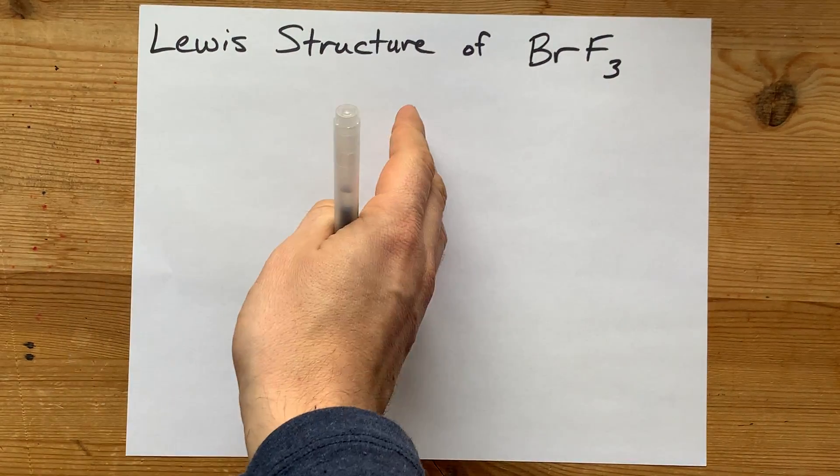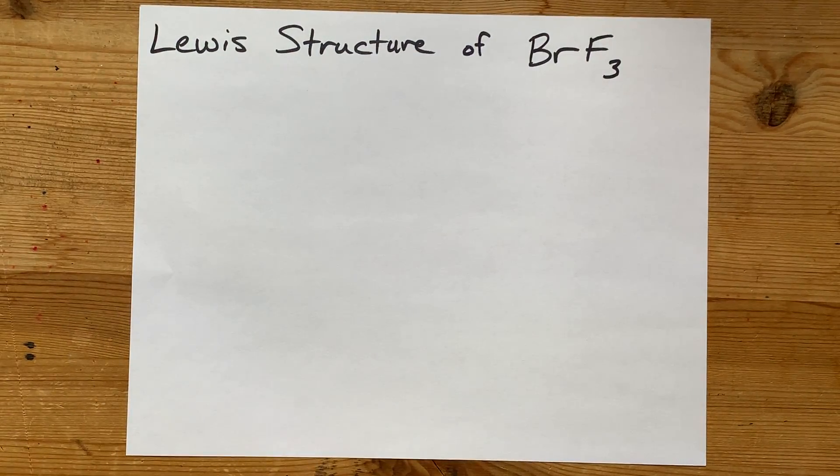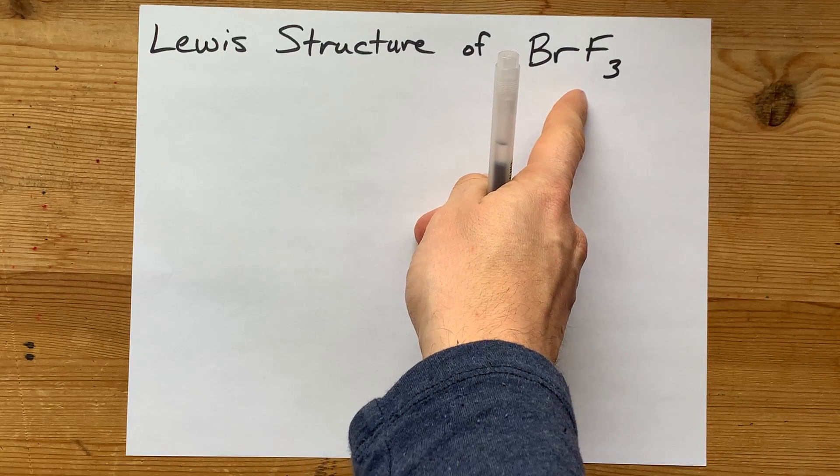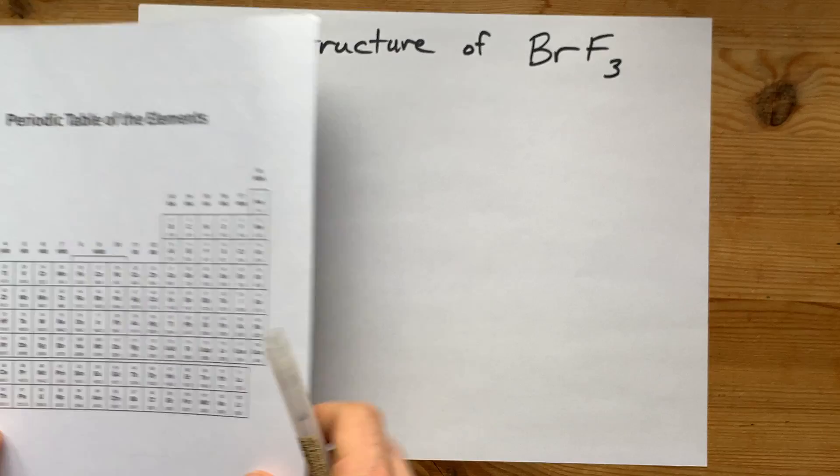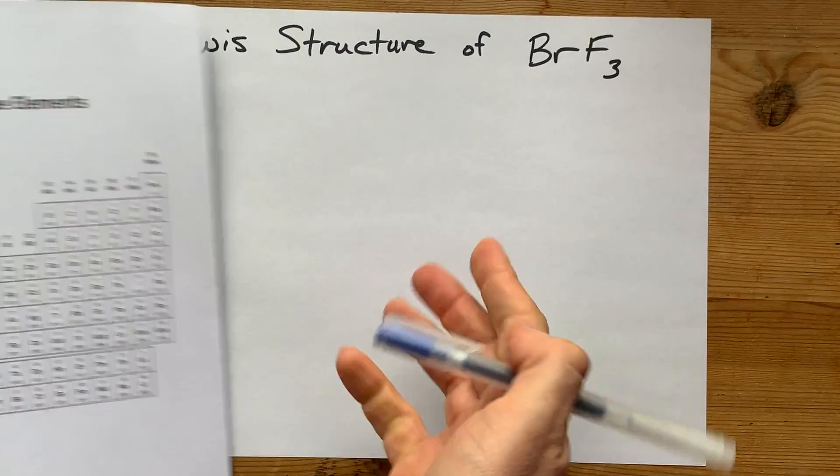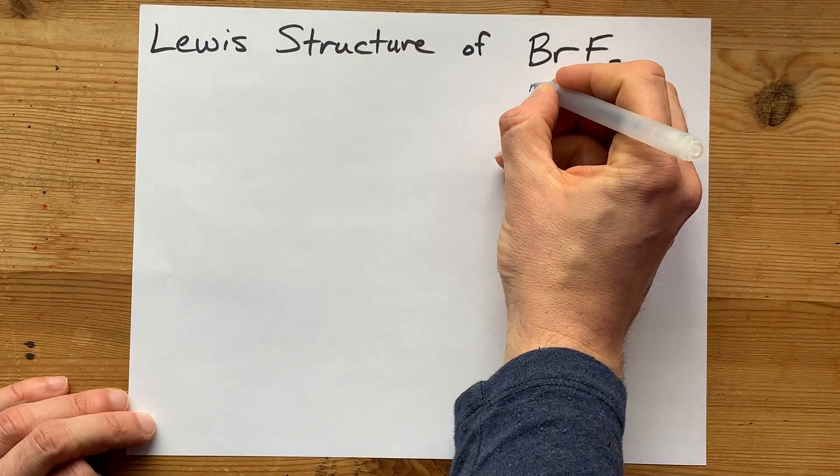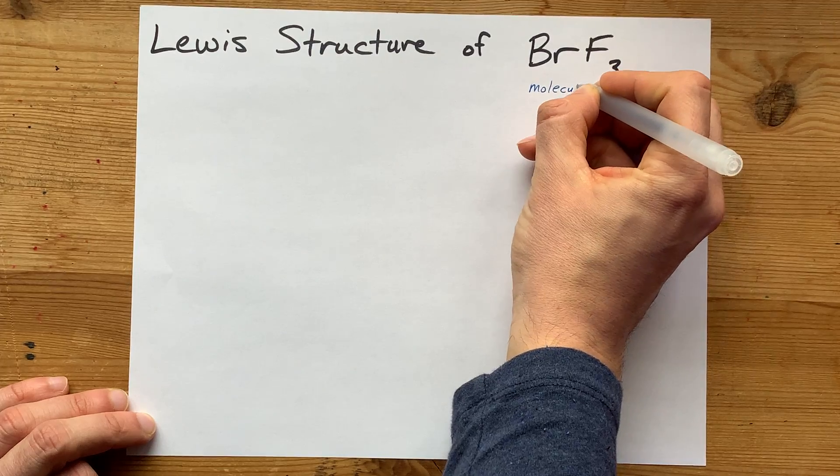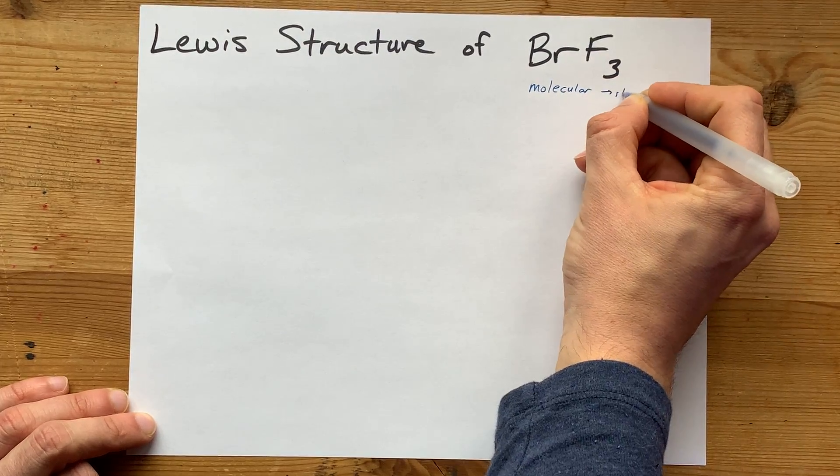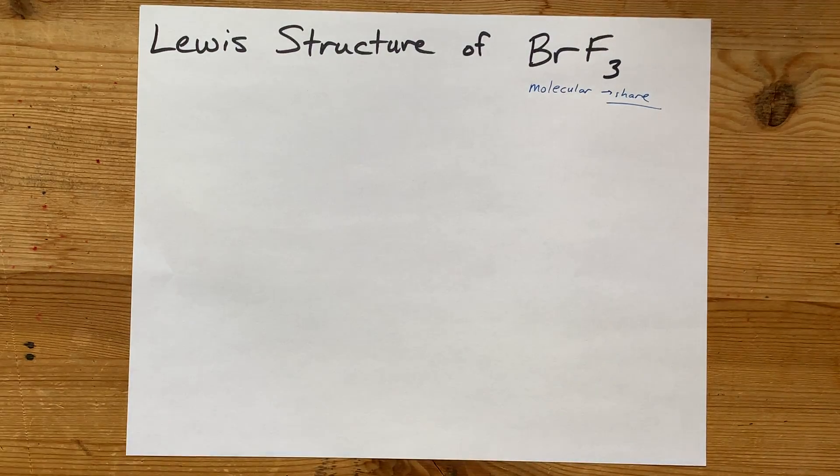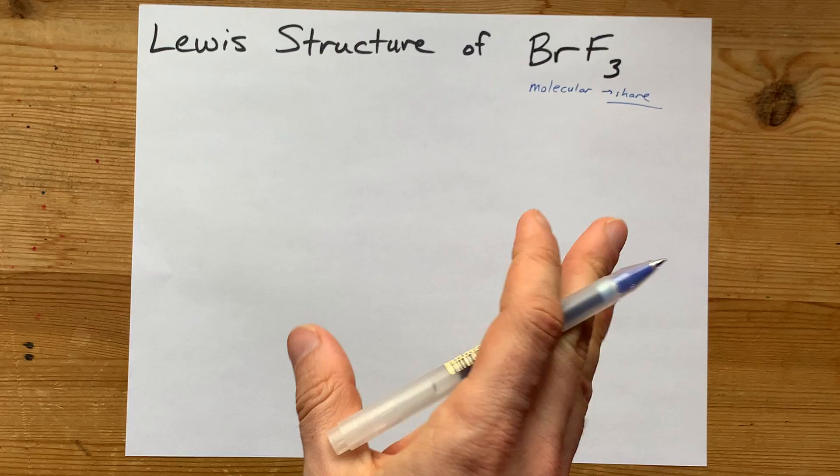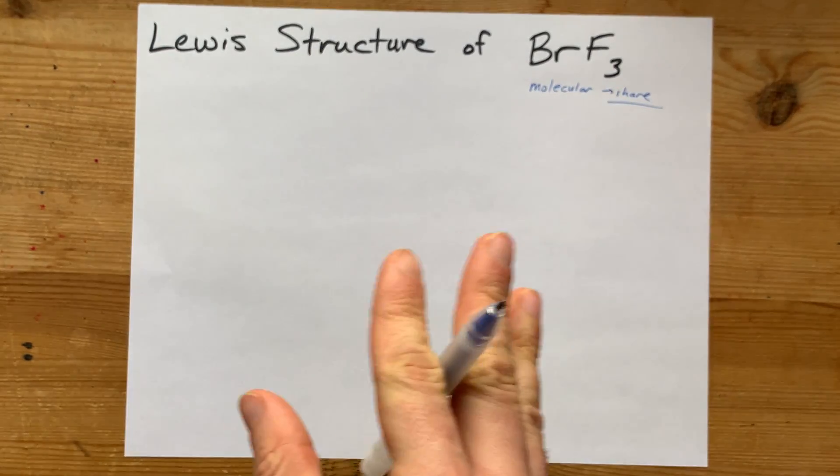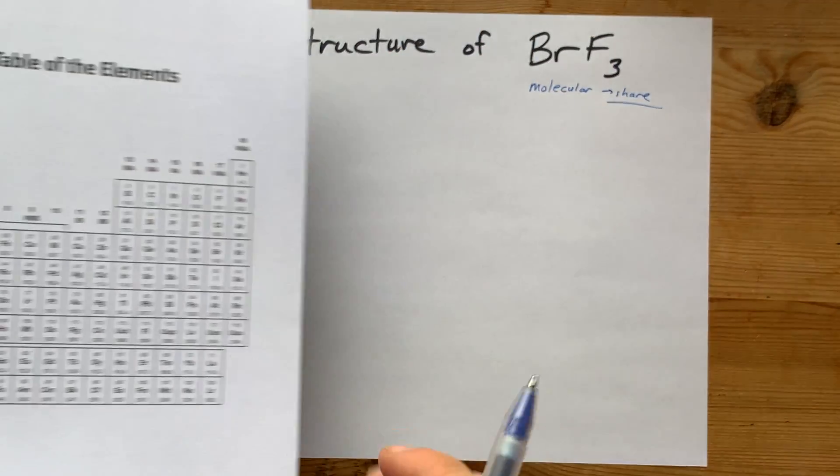Can we draw the Lewis structure of BrF3, bromine trifluoride? Yes, we can. First thing to note is that bromine and fluorine are both non-metals. That means when they bond together, they'll form a molecular compound. Molecular compounds share electrons. It's not going to be a transfer from one to the other. Instead, all the electrons get pooled together and distributed as needed.